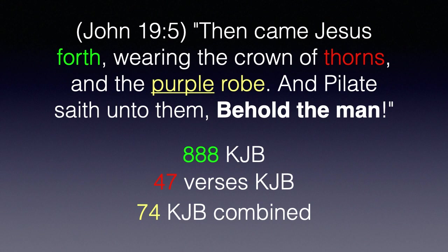Some word and verse counts: the word 'forth' occurs 888 times in the King James Bible. The word 'thorns' occurs in 47 verses. The words 'purple' and 'robe' combined occur 74 times. 888 is a multiple of 74, the value of the name Jesus. The phrase 'Behold the man' occurs exactly 6 times in the King James Bible, and this is the 6th and final occurrence. The first is in Genesis 3:22.